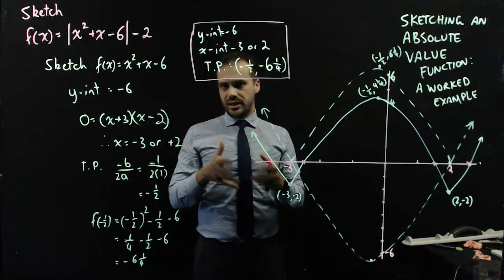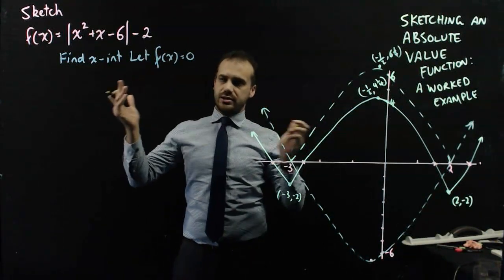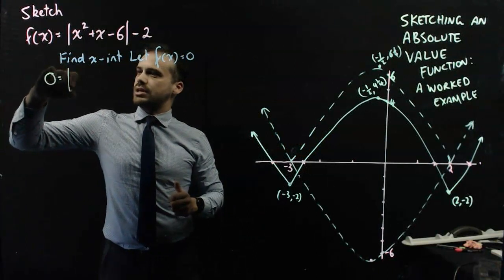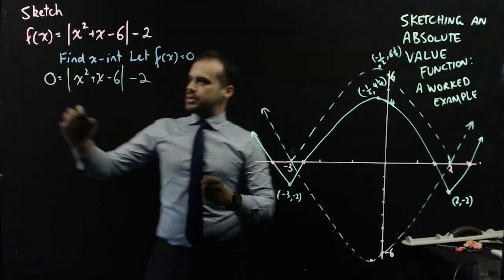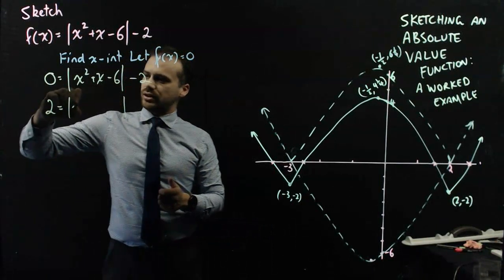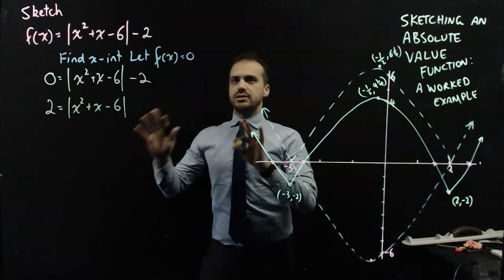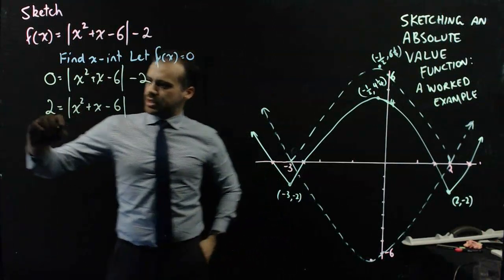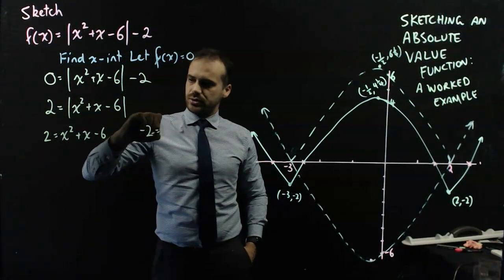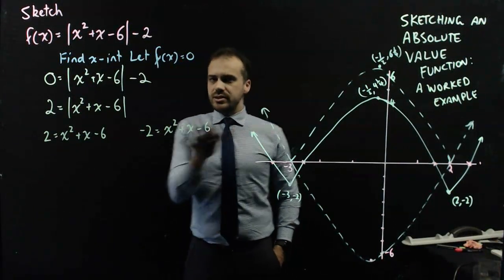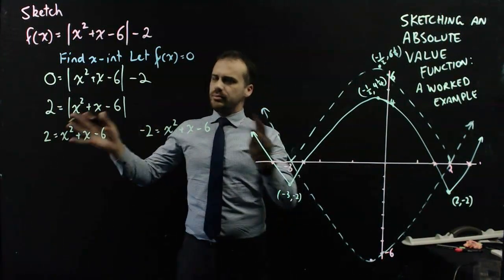How do we find x-intercepts? We let y equal 0. So let's find our x-intercepts by letting f of x equal 0. So 0 equals the absolute value of x squared plus x minus 6 minus 2. That means 2 equals the absolute value of x squared plus x minus 6. And this is where our equations first diverge, because that means either 2 equals x squared plus x minus 6, or negative 2 equals x squared plus x minus 6. This is good because I need 4 answers, so I need the equation to diverge.